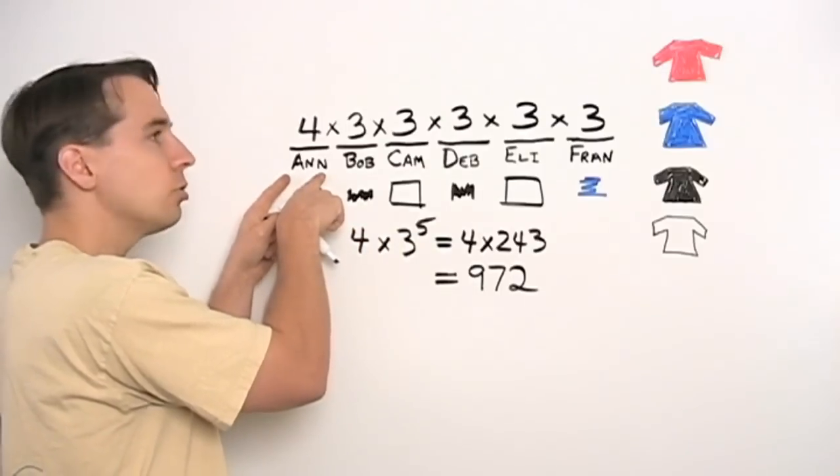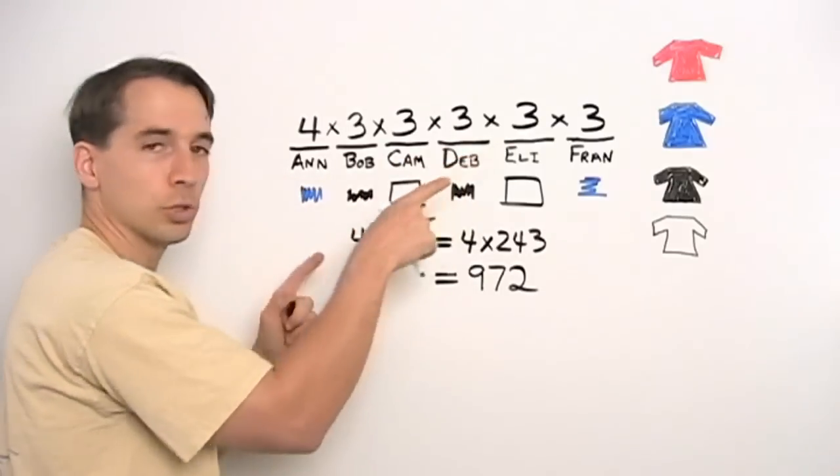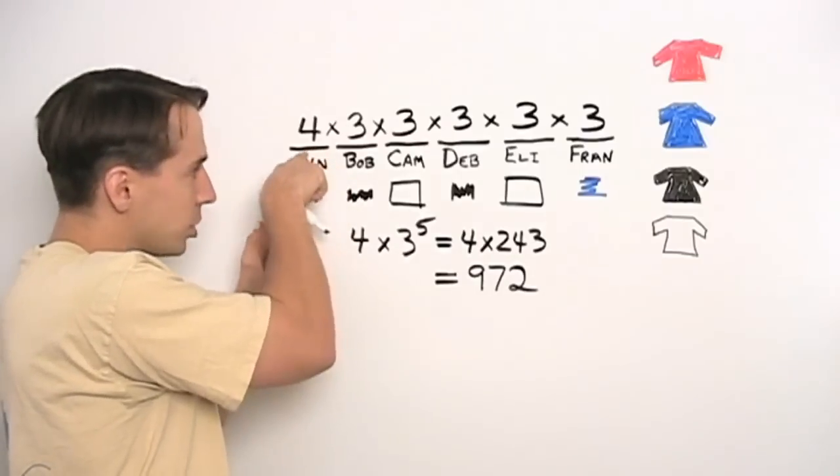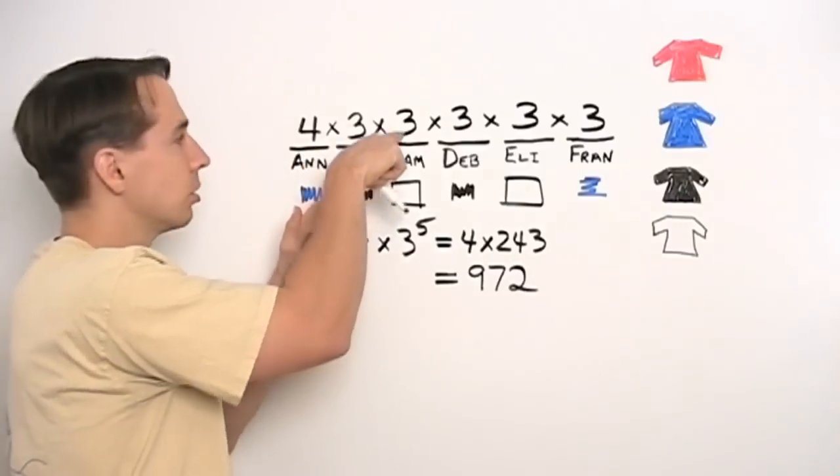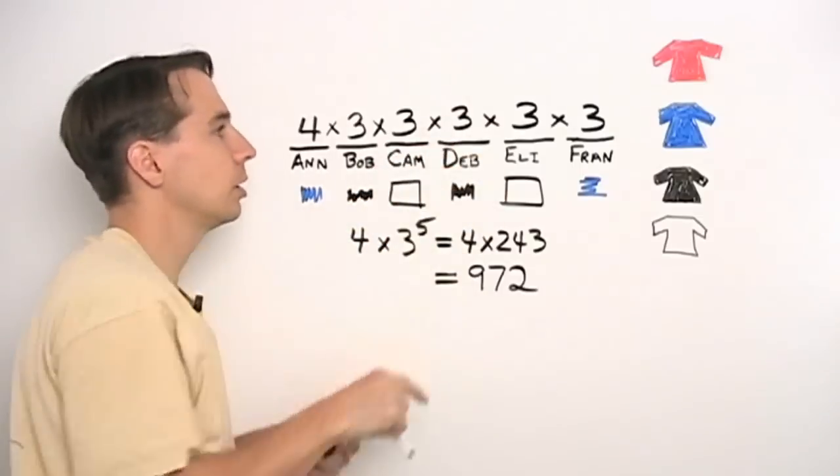And it's exactly what we did here. We thought, hey, Ann can choose first and she has four choices. And then once she's chosen, then Bob has three choices. And then Cam has three choices, and Deb and Eli and so on.